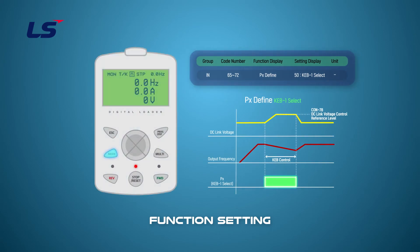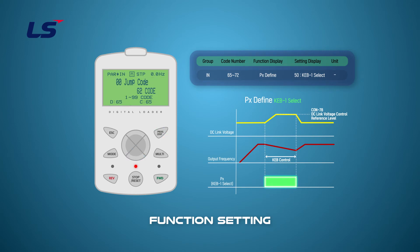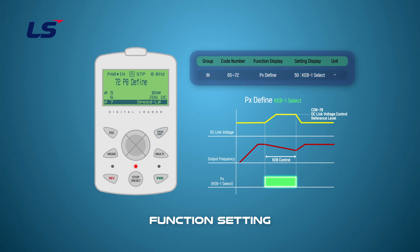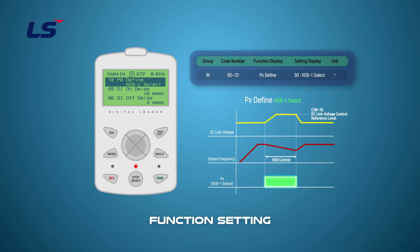To operate KEB by terminal block input signal, set one of IN-group 65 to 72 multifunction input terminals P1 to P8 to 50 KEB1 select. In this video, we will set up the P8 terminal by selecting IN-group 72 with 50 KEB1 select. However, this can be set only when CON 77 is set to none.